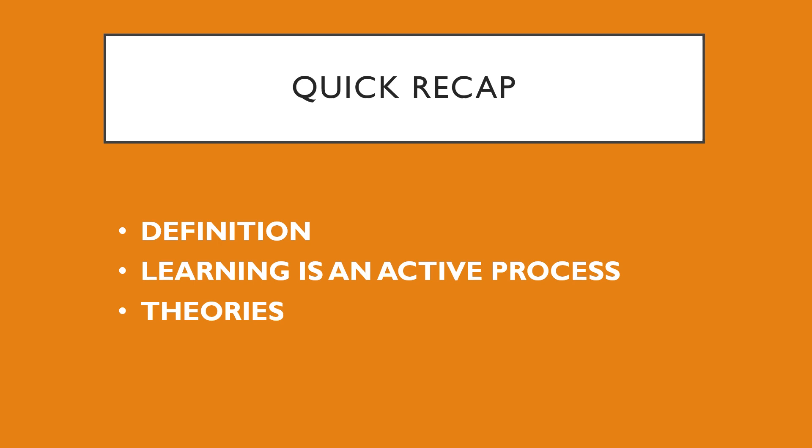Let's have a quick recap on what we have learned. We covered the definitions of learning — all focusing on three main things: learning includes a behavioral change, it is the result of experience, and the changes are relatively permanent or long-term. We also learned that learning is an active process and identified five major theories of learning. Learning is not a one-dimensional process; it takes place in many different ways and there are a variety of factors that influence how and what people learn.